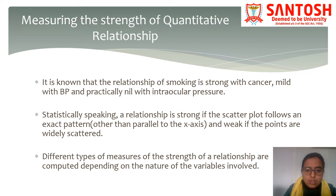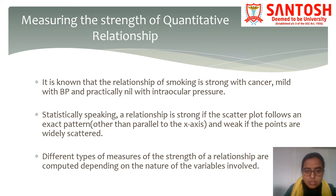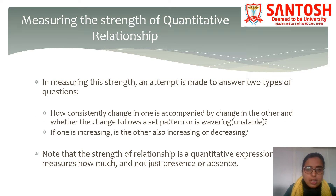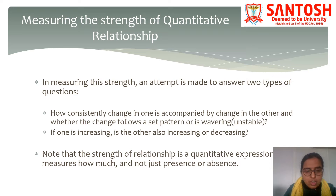Different types of measures of the strength of a relationship are computed depending on the nature of the variables involved. In quantitative type of variables, we will use correlation and regression. In measuring this strength, an attempt is made to answer two types of questions: how consistently does change in one variable accompany change in the other, and whether the change follows a set pattern or is wavering? Our interest is first in identifying if any change exists between the two variables, and then finding a set pattern between them.